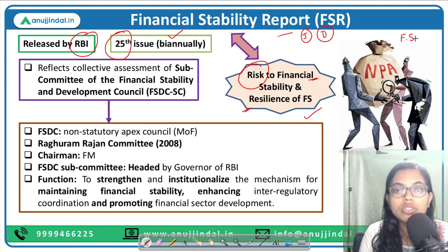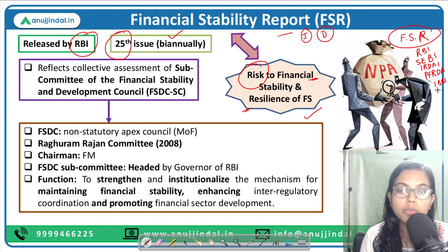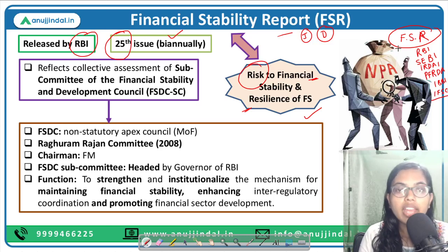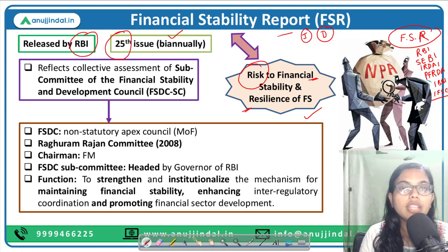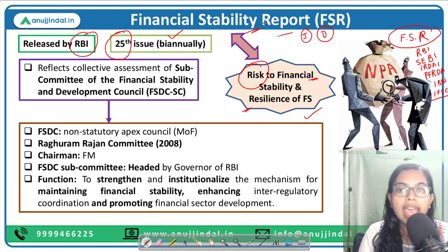The financial sector regulators include RBI, SEBI, IRDAI, PFRDA, IBBI — the Insolvency and Bankruptcy Board of India — and IFSCA. These financial services sector regulators provide their contribution, and based on their contribution, RBI comes out with the Financial Stability Report on what kind of risk is associated with the stability of the financial system of India.